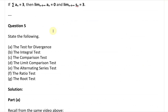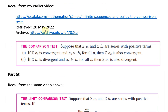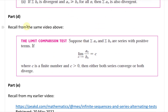Part D is the limit comparison test, from the comparison test video. Suppose that the summation of a_n and the summation of b_n are series with positive terms. If the limit as n approaches infinity of a_n over b_n equals a finite number c where c is greater than zero, then either both series converge or both diverge. Essentially, the series are scalar multiples of each other, so they behave the same way.